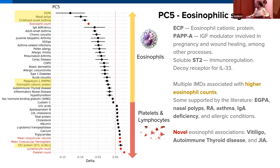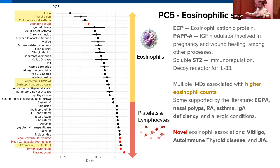For IMDs, multiple diseases are significant for PC5, especially on the eosinophilic side — including eosinophilic granulomatosis with polyangiitis, nasal polyps, rheumatoid arthritis, asthma, and allergic conditions, all well known to be associated with eosinophil levels. We also find potentially novel eosinophil associations such as vitiligo, autoimmune thyroid disease, and childhood arthritis.